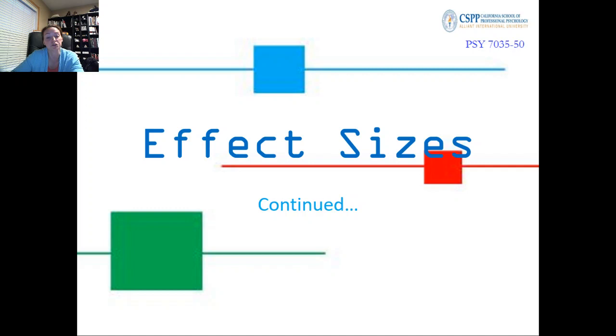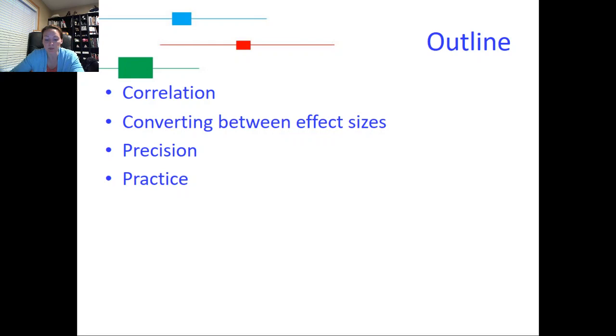Alright, so now we're going to be finishing up the Effect Sizes lecture with Part 2, so continued. We're going to be talking about effect sizes related to correlation. We're also going to talk about converting between effect sizes. We're going to talk about what affects the precision of an effect size, and then we're going to talk about how you're going to be getting some practice with all of these concepts, which you'll be doing with Calculation Assignments 1 and 2 this week, which I'll talk about at the end.